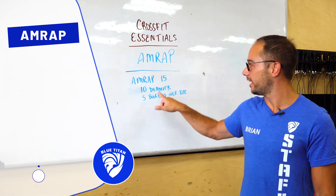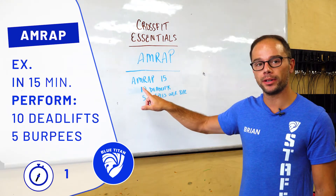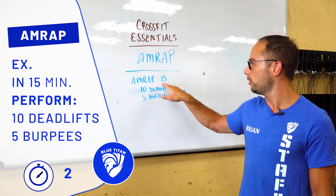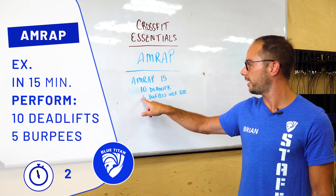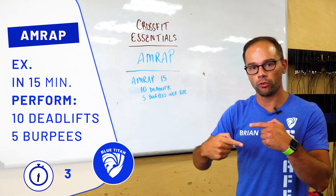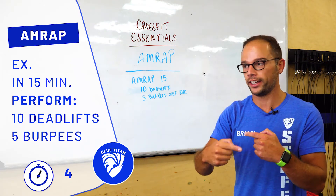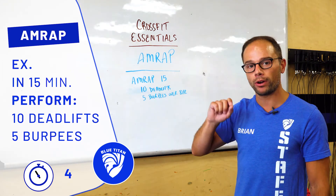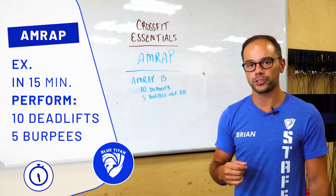An example of this is a given time to perform a task. So, as many rounds as possible in 15 minutes, you will perform 10 deadlifts and 5 burpees, over and over again until the time elapses, and then your number of rounds or reps is your final score.